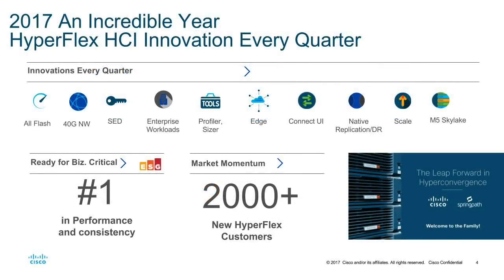In 2017 we had an incredible year with many major releases. We started with hybrid appliances, quickly added all flash, and we're continuing to offer both — customers need choice. We brought in 40 gig networking from UCS, seeing big performance increases especially on all-flash systems. We added self-encrypting drive support for data-at-rest encryption on all platforms — M4, M5, hybrid, and all flash. We continued pushing out CVDs for enterprise workloads including UC applications and ATRC.